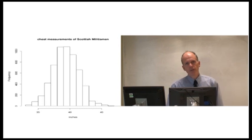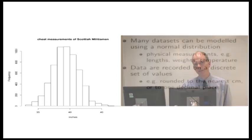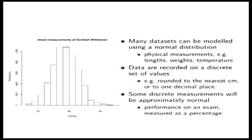Although we can use the normal distribution for continuous data, it also serves as a very good model for some discrete data sets. For example, if you measure your performance on an exam, usually recorded as a percentage, then although those numbers are usually integers, we can still use a normal distribution as, in most cases, an adequate approximation to the data.